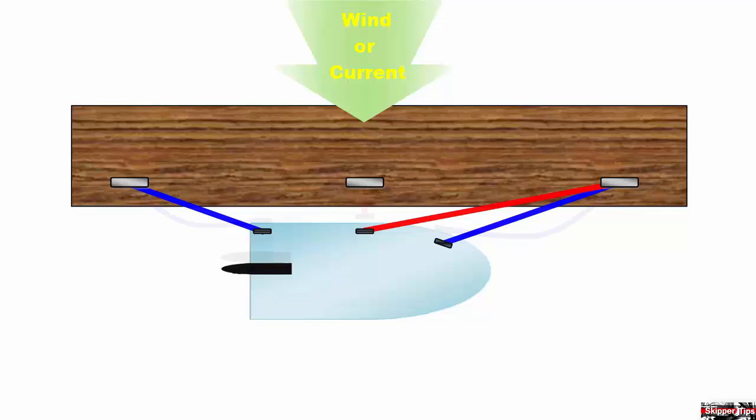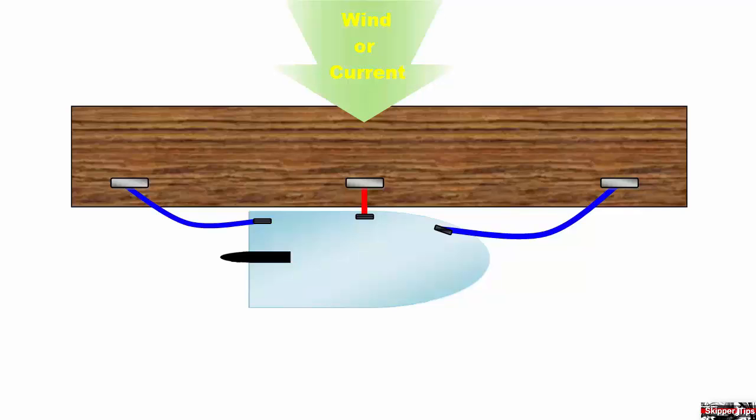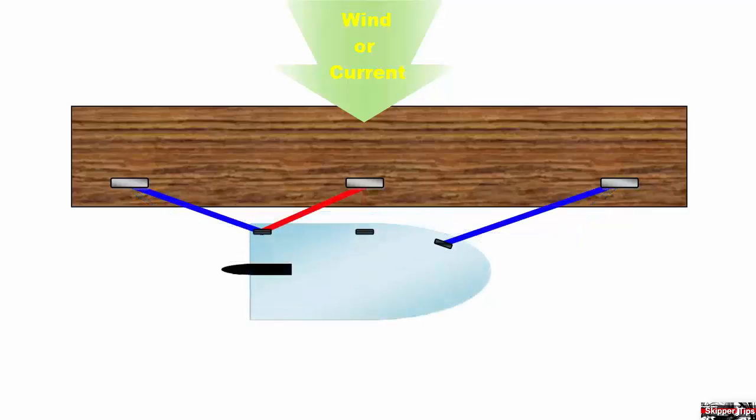When you are ready to board the boat again, pull the boat in with the breast line and tie it off to a dock cleat as shown. Board the boat and then ease the breast line to allow the other docking lines to take the strain.